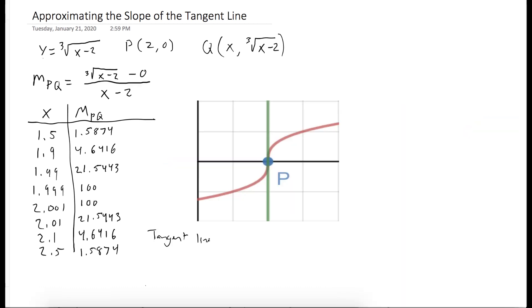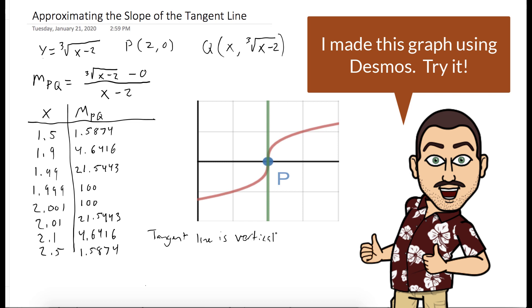So its slope does not exist. So if we pick numbers closer and closer to 2, the slope would approach infinity.